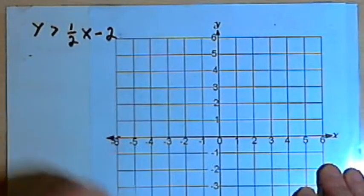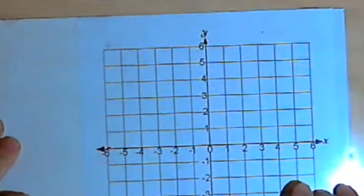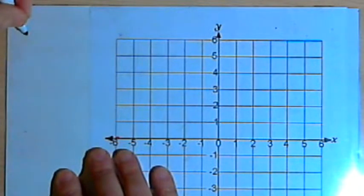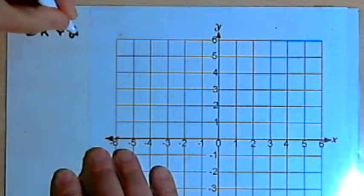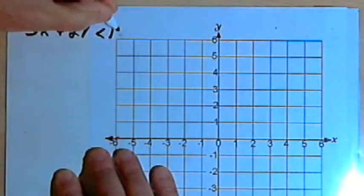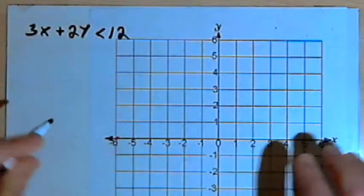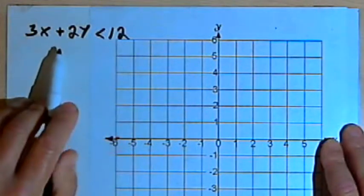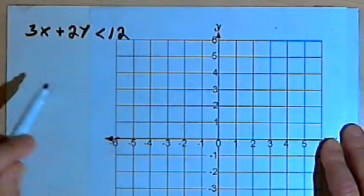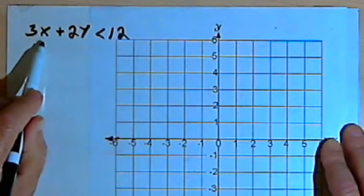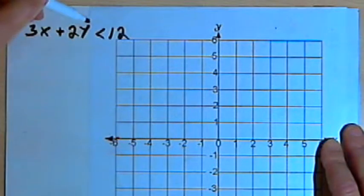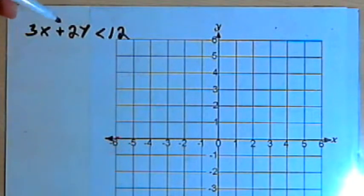I want to do another inequality. I want to do something that, instead of being in slope-intercept form, is in standard form. So let's do 3x plus 2y is less than 12. I'm going to start out by graphing this as if it's an equation: 3x plus 2y equals 12. Remember, when we have something in standard form, the x and the y are both on the same side of the equation.